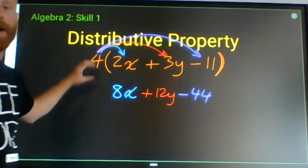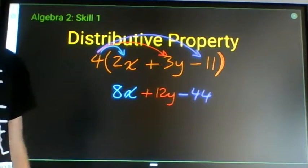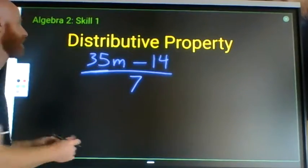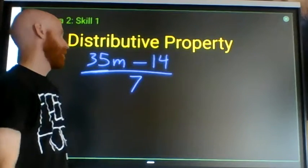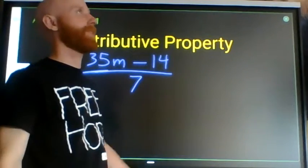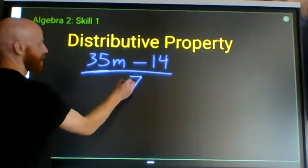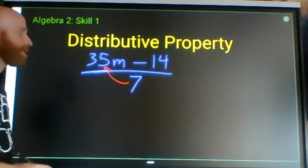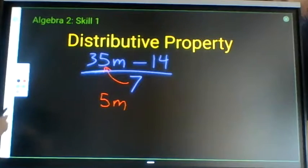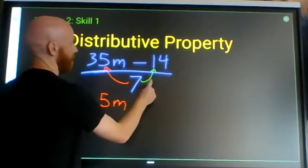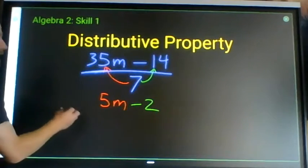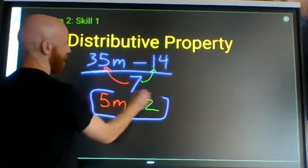The value of that simplified expression is the same as the original one. The distributive property works very similarly with division. If I have a fraction bar, I'm dividing the numerator by 7, and I can accomplish the same thing by dividing each term separately: 35M divided by 7 gives us 5M, and minus 14 divided by 7 gives us minus 2, so 5M minus 2.